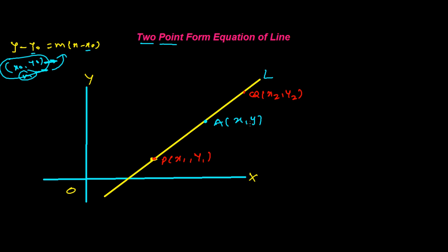Any value of x and y will satisfy the equation of this line L. When we have the equation of line L and plot the value of x and y, it will satisfy that equation. So now we need to find out the two-point form of equation. We have point P and point Q, and for generalization we take point A(x, y).